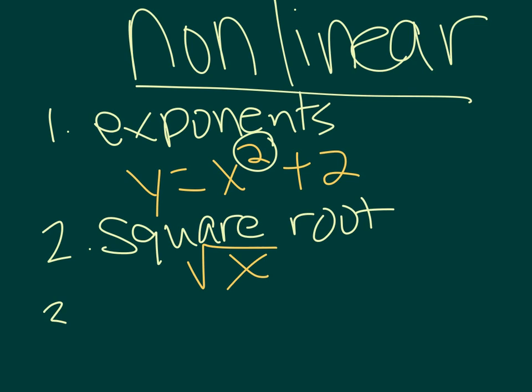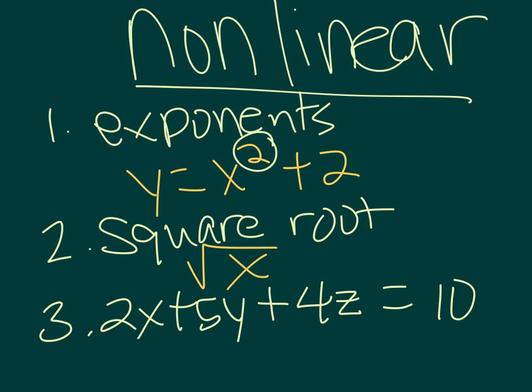And the third one that you may see would be something with three variables. So you might see 2x plus 5y plus 4z equals 10. And this z here ruins the game. You can't even graph it on a regular coordinate plane. You need a three-dimensional thingy.